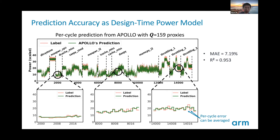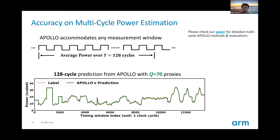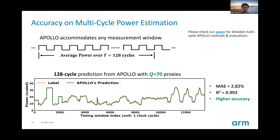Apollo accommodates any measurement window size besides per-cycle power tracing. For example, we can set the measurement window size equal to 128 cycles. Here are the predicted power traces on all testing workloads — the model uses only 70 proxies as input. We can observe that the prediction and label correlate better than in the per-cycle case, as shown in the error and correlation metrics. Since Apollo achieves high accuracy with few proxies, it is possible to directly synthesize this power model as part of the CPU RTL as a runtime on-chip power meter, OPM.